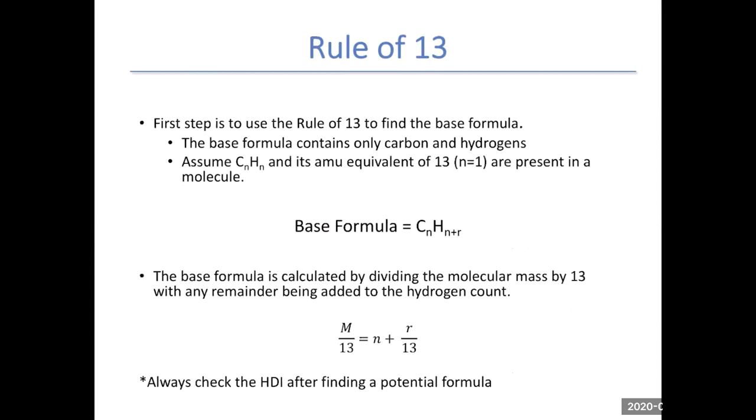With the rule of 13, your first step is to find a base formula. The base formula contains only carbons and hydrogens. We assume a CnHn component, and its equivalent AMUs of 13 are present in the molecule. Our base formula becomes CnHn+R, where N is the equivalent of 13s, and R is any remainder mass present in our molecule. We have a formula here of M/13 = N + R/13. Whenever you determine a base formula or any formula using the rule of 13, always check the HDI to determine if it's a possible formula.